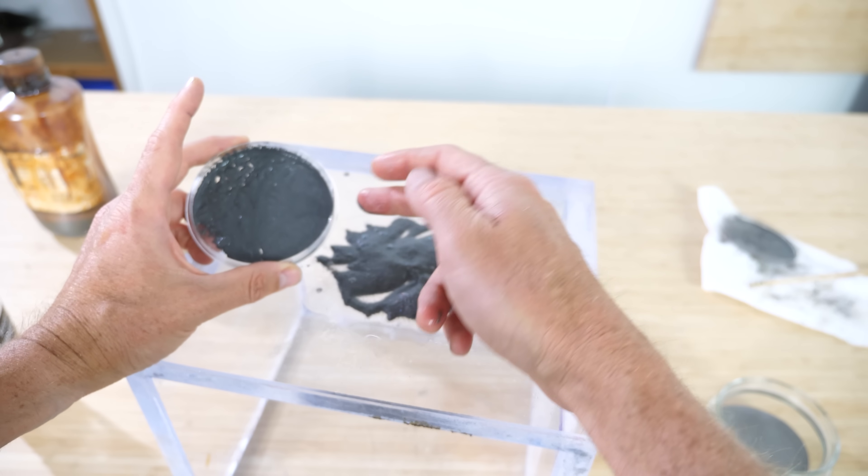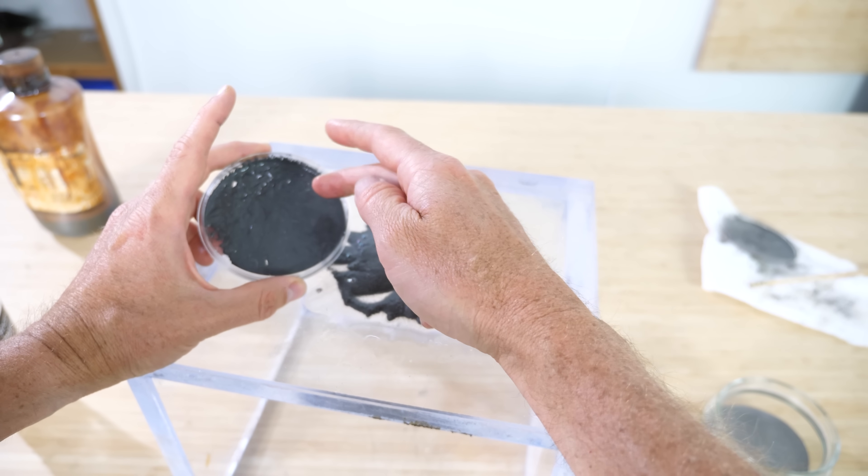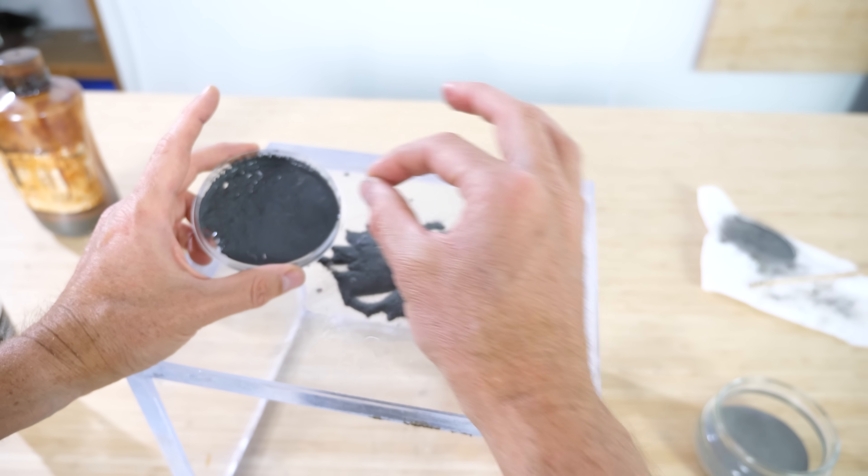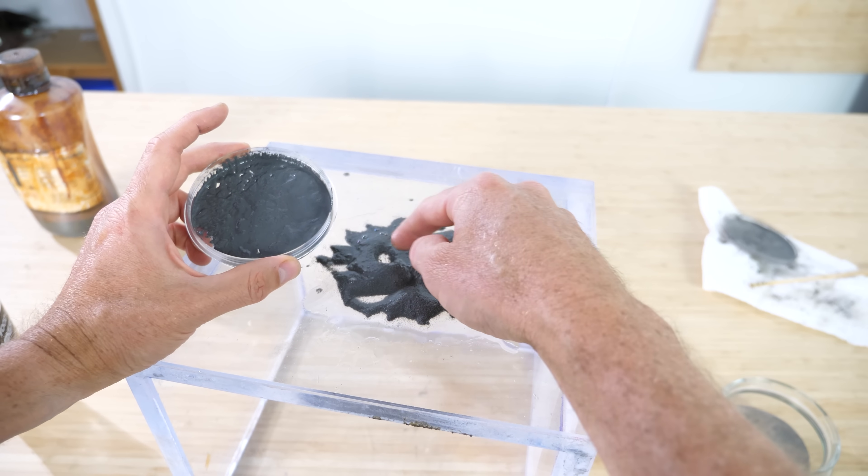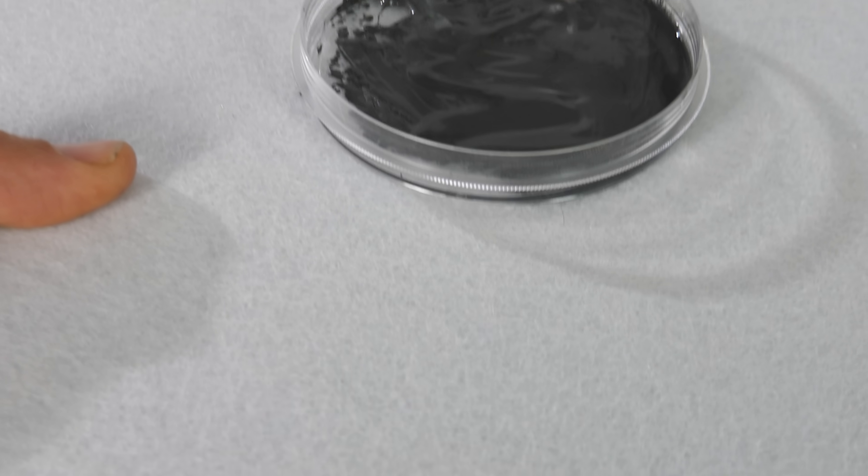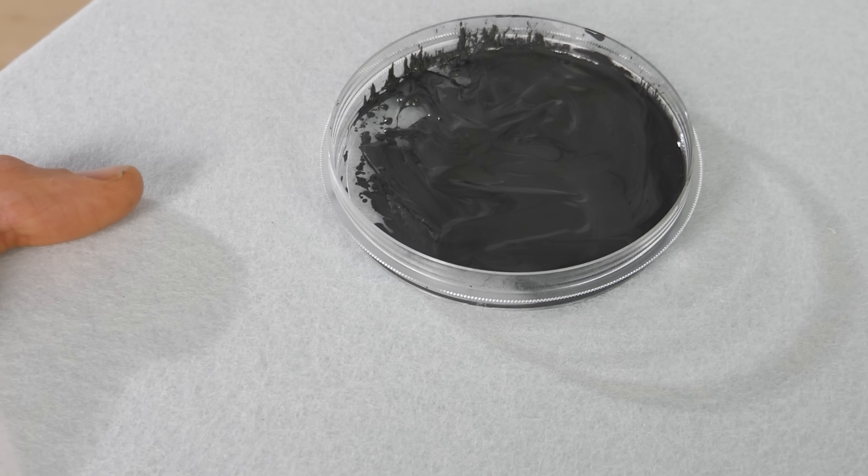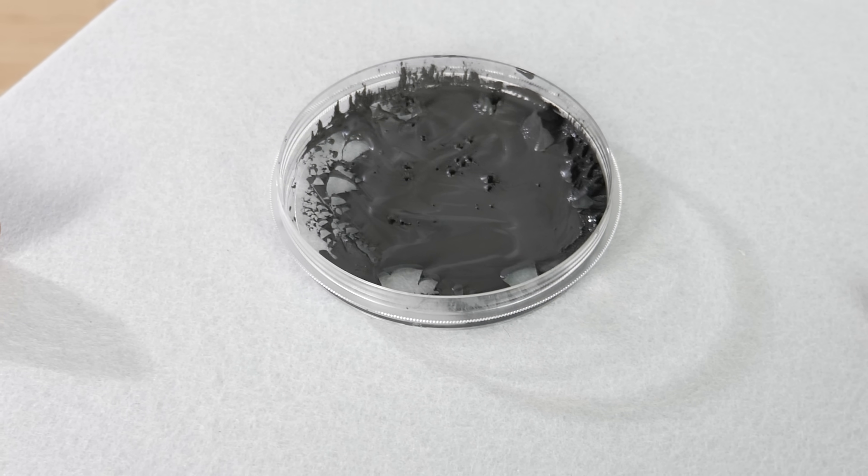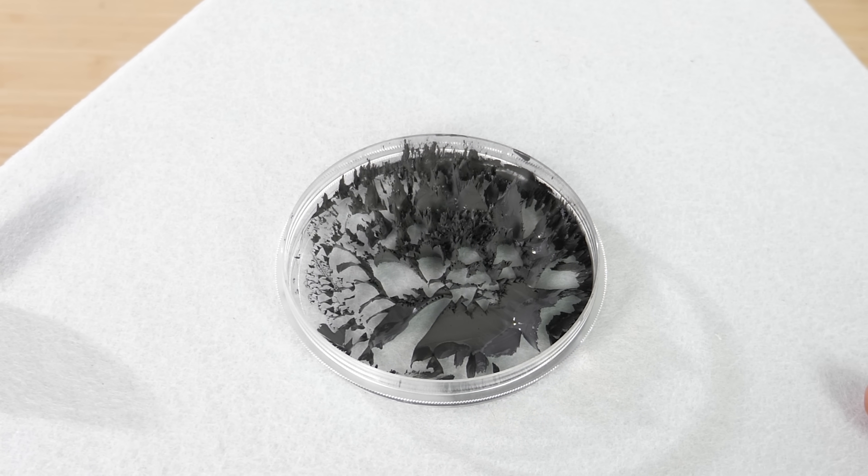So the only difference between these two is the one that I purchased was actually just a lot finer iron particles than the iron filings that I have. So with Oobleck, you get a solid when you hit it really hard.